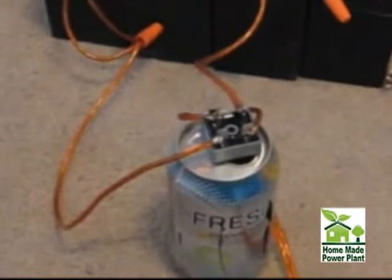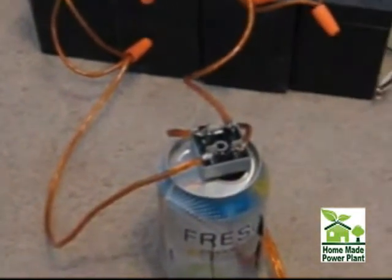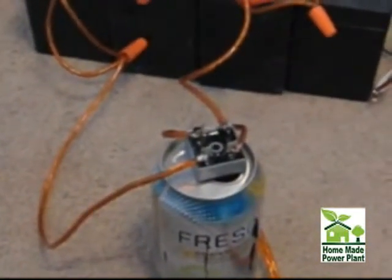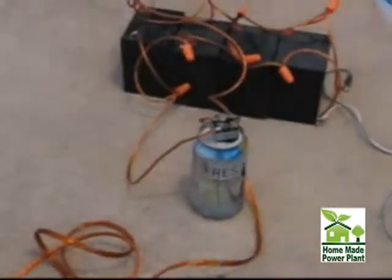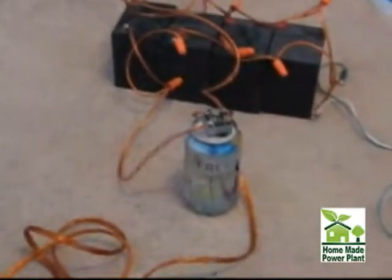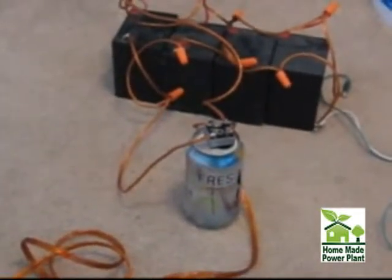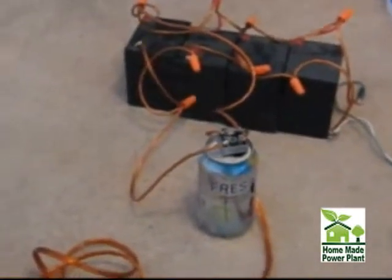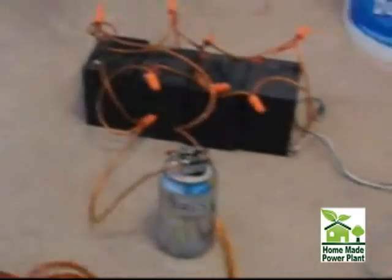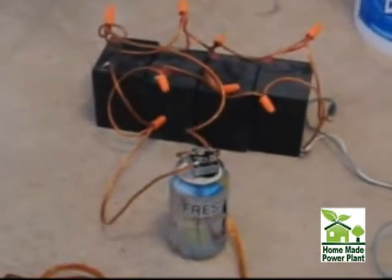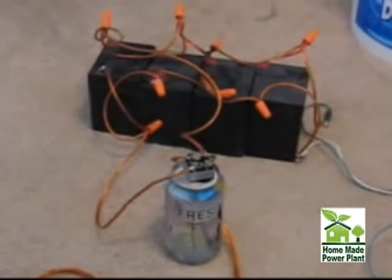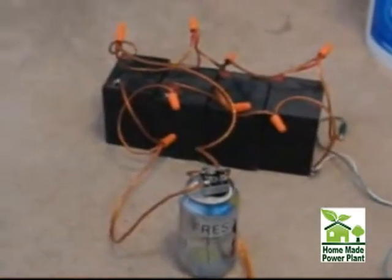This device is a full-wave bridge rectifier. By the way, the Fresca can that it's sitting on is acting as a heatsink. This is a full-wave bridge rectifier, which can take an AC signal, which means it has a varying polarity and a varying frequency, and convert it into a voltage signal that has no frequency or zero frequency, and the polarity does not change.